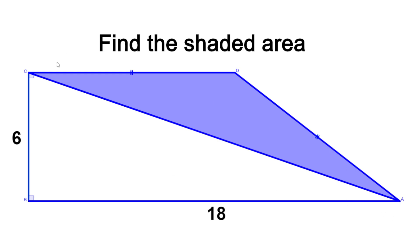To find the area, the first piece of information we will look for is the length of segment AC, which we will consider to be the base of triangle ACD. To find the length of segment AC, we'll be using the Pythagorean theorem, as we have another triangle — triangle ABC — that is a right angle triangle. The Pythagorean theorem states that the sum of the squares of the sides that form the right angle of a right angle triangle is equal to the square of the hypotenuse.